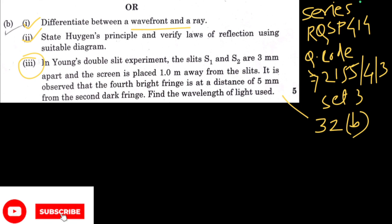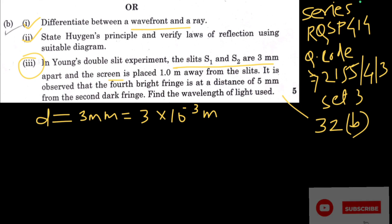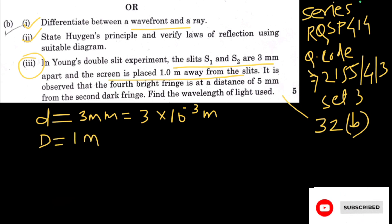In Young's double slit experiment, the slits S1 and S2 are 3 mm apart, so the distance between the two slits d = 3 × 10⁻³ m. The screen is placed 1 metre away from the slits, so D = 1 m. It is observed that the fourth bright fringe is at a distance of 5 mm from the second dark fringe. So X₄ is at a distance 5 mm from the second dark fringe — this is equation 1. We have to find the wavelength of light, lambda.